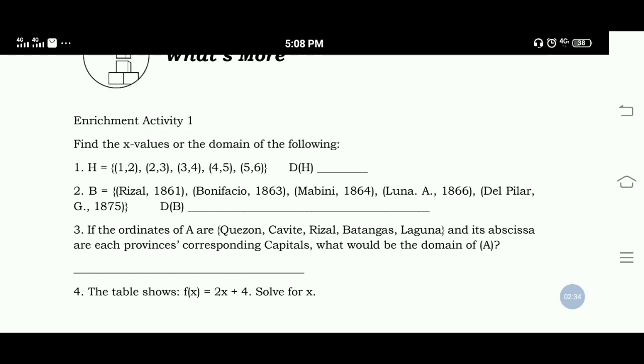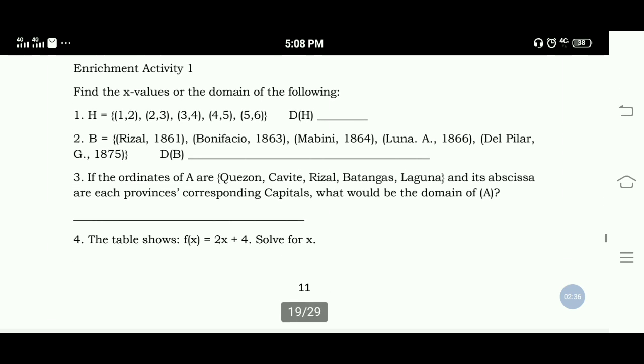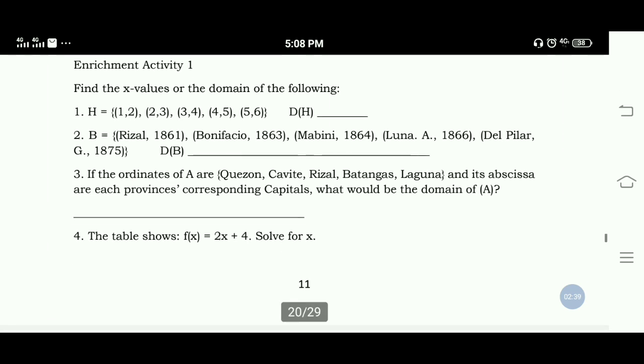Number 3: If the ordinates of A are Quezon, Cavite, Rizal, Batangas, Laguna, and its abscissa are H provinces corresponding capitals, what would be the domain of A?